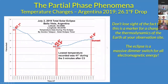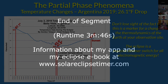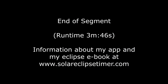When I took temperatures in 2019 in Argentina with an I-button, I documented an incredible temperature decrease of 26.1 degrees Fahrenheit — which is really unusual. Usually the drop is between 10 and 15 degrees. But don't lose sight of the fact that this temperature monitoring means a lot, because it's actually a representation of the changing thermodynamics at your eclipse site. The partial phases act as a gigantic dimmer switch, dimming all of the electromagnetic energy reaching Earth.